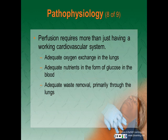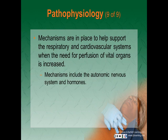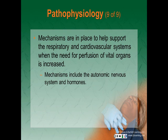Perfusion requires more than just having a working cardiovascular system. It also requires adequate oxygenation exchange in the lungs, adequate nutrients in the form of glucose in the blood, and adequate removal of waste primarily through the lungs. Mechanisms are in place to help support the respiratory and cardiovascular systems when the need for perfusion of the vital organs is increased. These mechanisms include the autonomic nervous system as well as hormones, and they are triggered when the body senses that the pressure in the system is failing. Hormones stimulate an increase in heart rate, strength of cardiac contractions, and vasoconstriction in non-essential areas, primarily your skin and GI tract — all designed to maintain pressure and perfusion of vital organs. The autonomic nervous system and hormones respond within seconds.